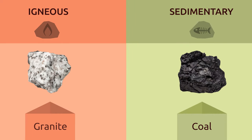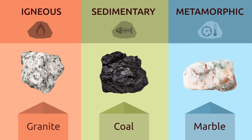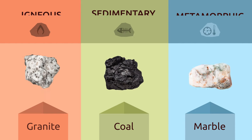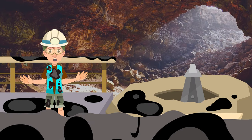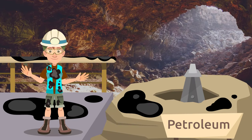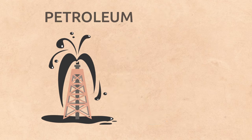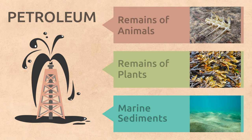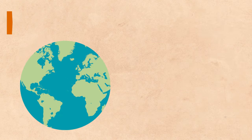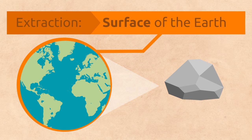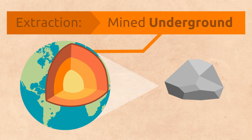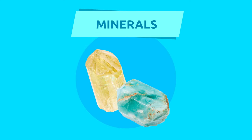Did you know that petroleum, even though it's liquid, is a rock too? Petroleum is formed from the remains of living things like animals and plants, and from sediment deposits found in marine beds. Rocks are extracted from the surface of the earth in quarries, or they are mined underground.